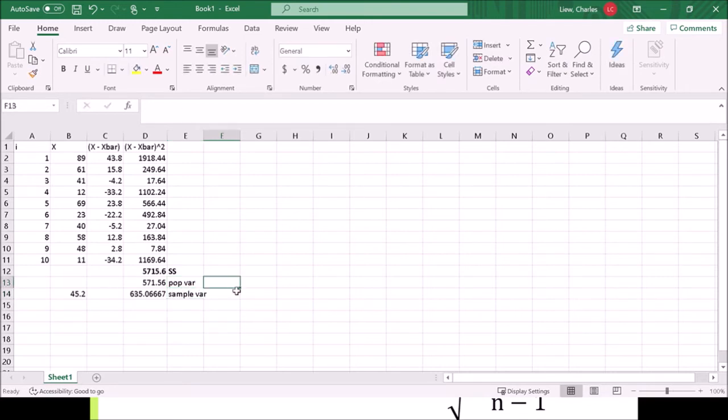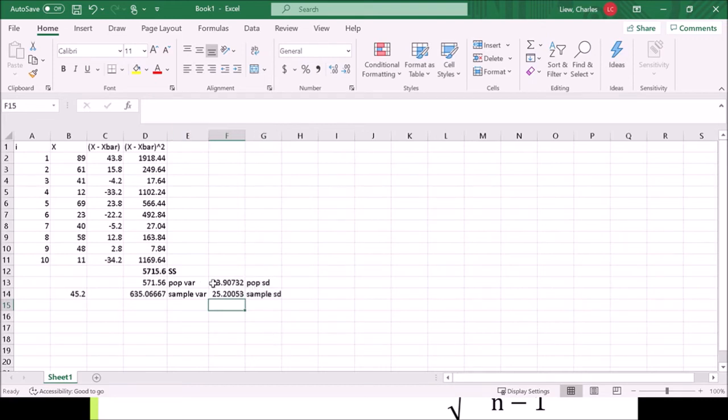To turn those into standard deviation, we just square root them. So if I square root this number, I get population standard deviation. If I square root this number, I get sample standard deviation. So you see that these numbers very easily derive from this first step, getting the sum of squares.